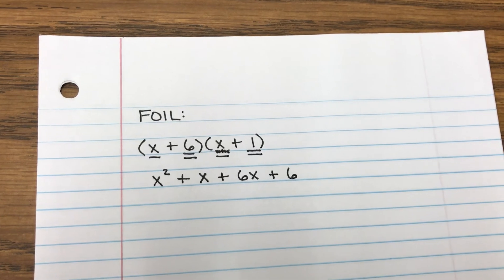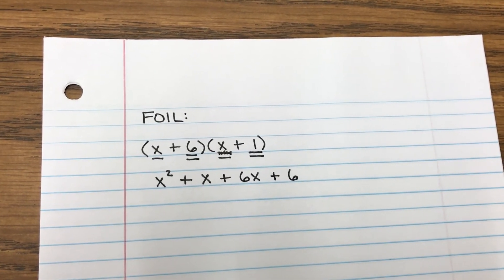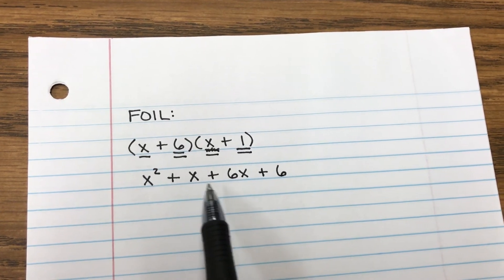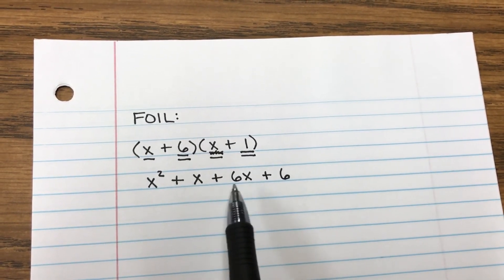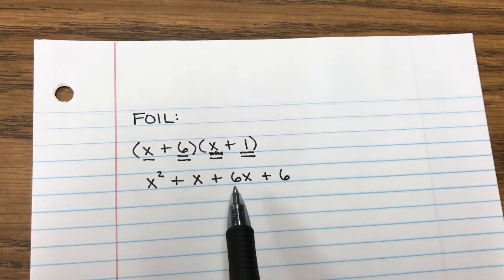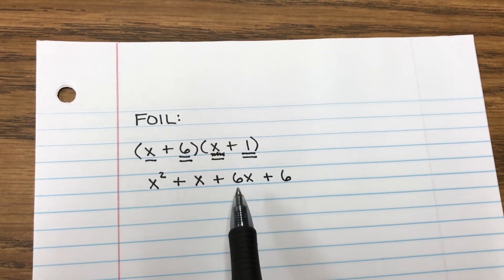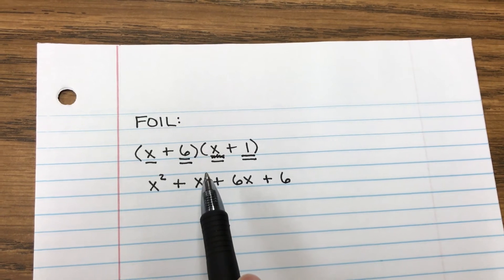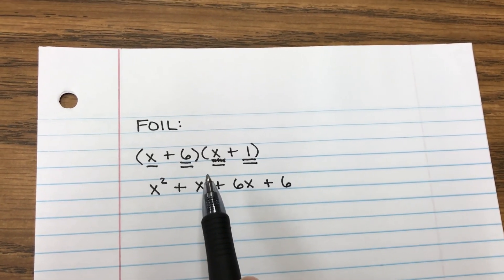So are we done now? No, we still have to combine like terms. Do you see those like terms in the middle? Like terms are terms that have the same variables and the same exponents. They have the same variable, which is X. They have the same exponent, but you just can't see it, but it's understood to be 1.